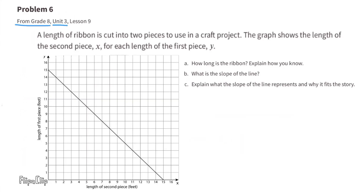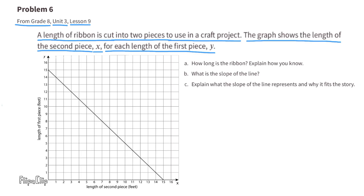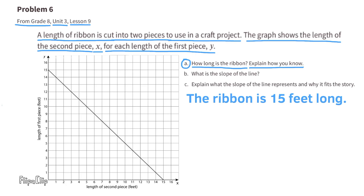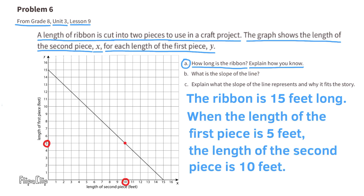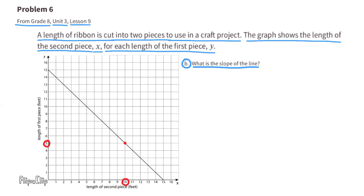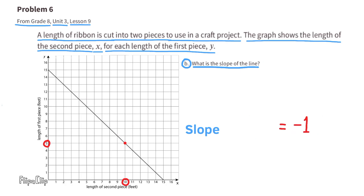Problem number 6, from 8th grade Unit 3 Lesson 9. A length of ribbon is cut into two pieces to use in a craft project. The graph shows the length of the second piece, x, for each length of the first piece, y. How long is the ribbon? The ribbon is 15 feet long — when the length of the first piece is 5 feet, the length of the second piece is 10 feet. The slope is the rise over run: the rise goes up 1 (positive 1) and the run goes to the left 1 (negative 1), so the slope is negative 1.